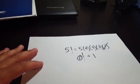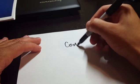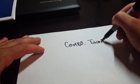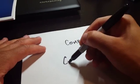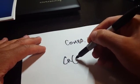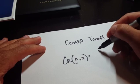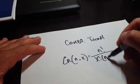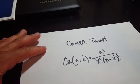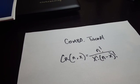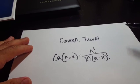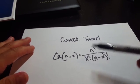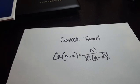Powerball is based on a thing called combination theory. The equation is written like C(n, x), and I'm going to relate this to Powerball. We have 69 balls — n is our population — and we're going to pick 5. We want to find out how many combinations of 5 balls we can get out of 69.